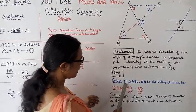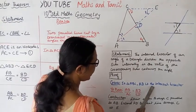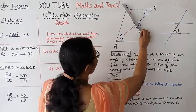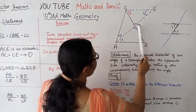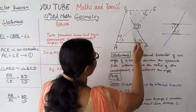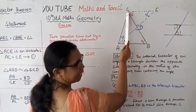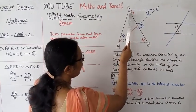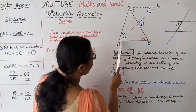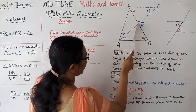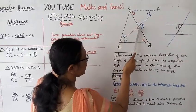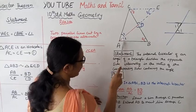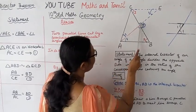Given: in triangle ABC, AD is the internal bisector of angle A.